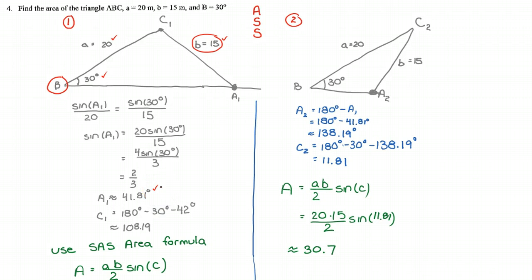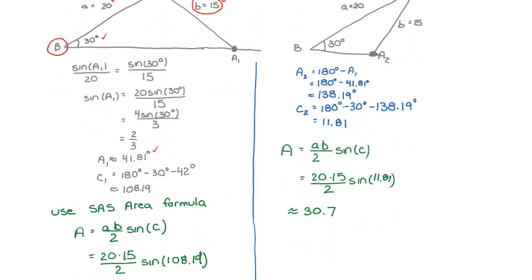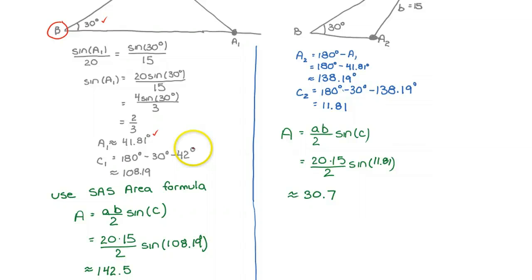Now, you might have noticed I'm calling this first case A1, C1, and the second case A2, C2. That's just for organization. And now that I have A1, I can calculate C1 simply by using the property that the sum of the angles is 180 degrees.